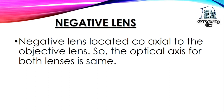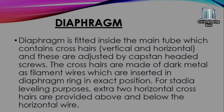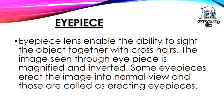The diaphragm is fitted inside the main tube and contains vertical and horizontal crosshairs, adjusted by capstan-headed screws. The crosshairs are made of dark metal filament wires inserted in the diaphragm ring. For stadia leveling, two extra horizontal crosshairs are provided above and below the horizontal wire. The eyepiece enables the ability to sight the object together with the crosshairs; the image seen is magnified and inverted. Some eyepieces erect the image to normal view and are called erecting eyepieces.